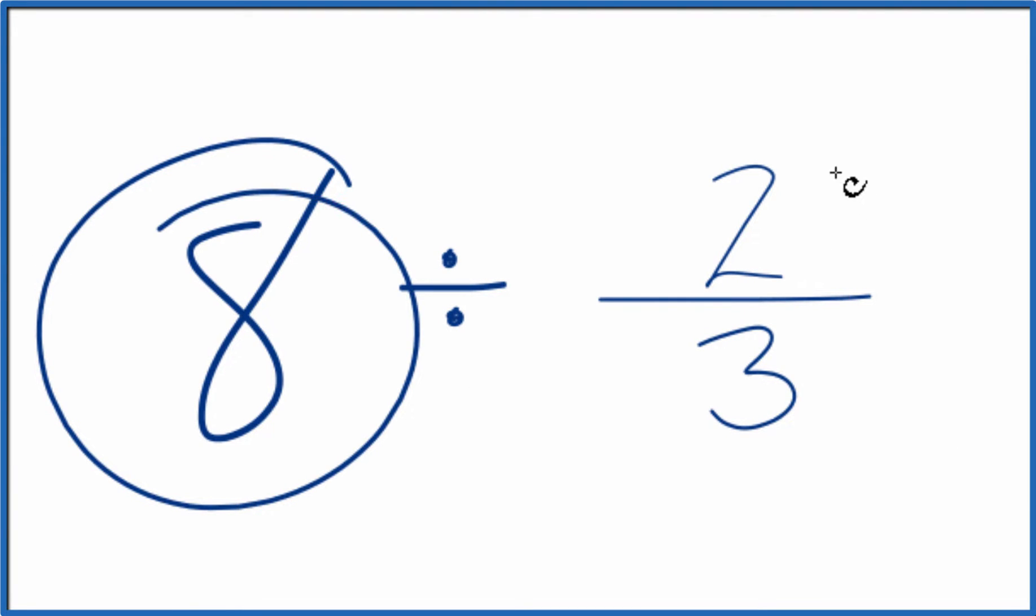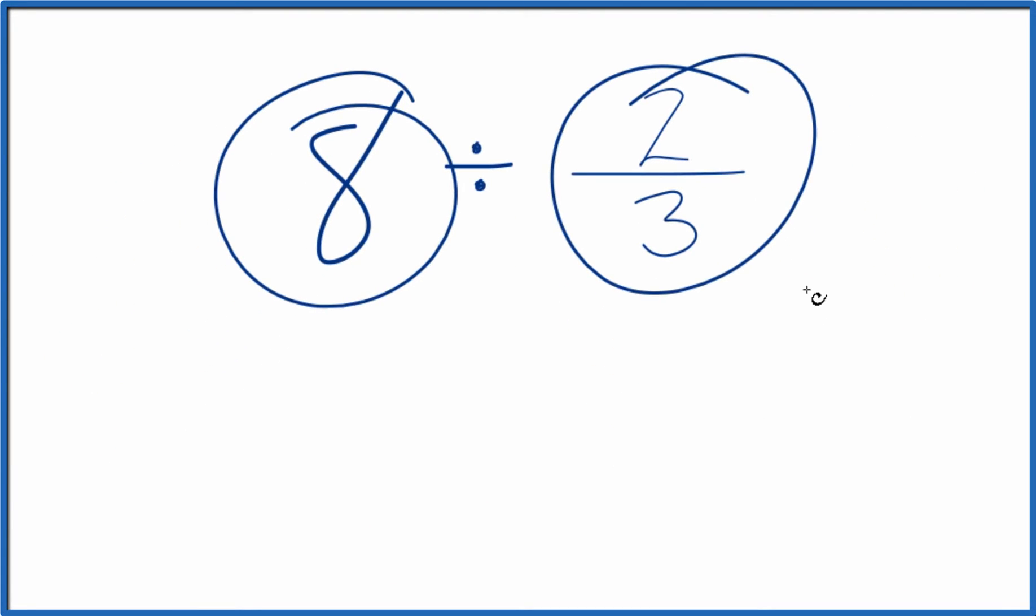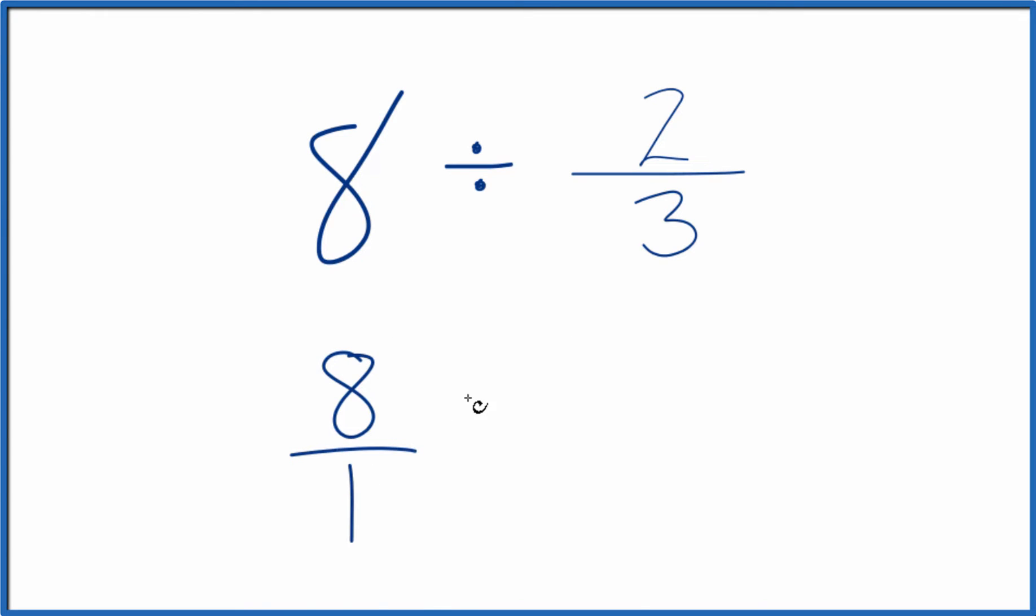Let's divide 8 by 2 thirds. And here's how you do it. So let's call this 8 over 1. Still 8, we're just dividing by 1, but now we have a fraction.